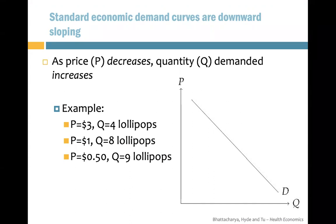Here is an example with lollipops. If the price is $3, you want 4. But if it's only half a dollar, then you want 9.